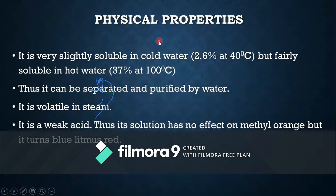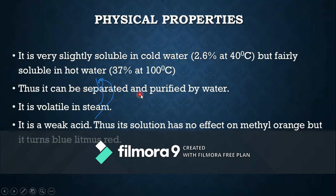Boric acid is very slightly soluble in cold water. Below 40 degrees Celsius, solubility is low — about 2.6 percent. Above that temperature, solubility increases about 35 times, reaching around 37 percent. It can be separated and purified by crystallization from water.